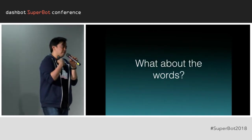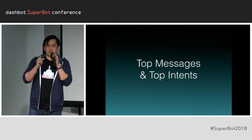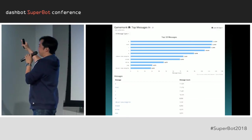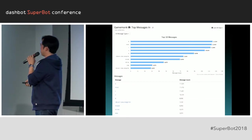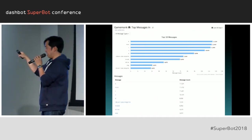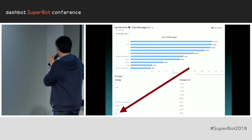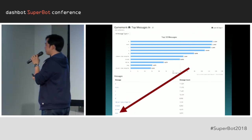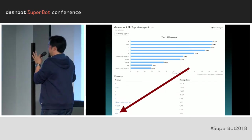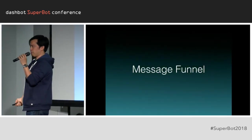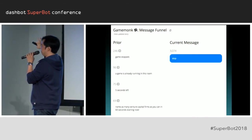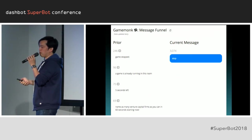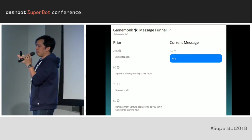What about the words? We help you understand the top messages and intents being sent to your bot. Here's an example from that GameMonk bot — the top messages are A, B, C, D, which are answers to trivia questions. But there's one interesting one: 'stop.' What happened to cause users to say that? It means they hated the game. So we introduced the concept of the message funnel — click on 'stop' and we show you everything the bot and users said before that caused them to say that word.